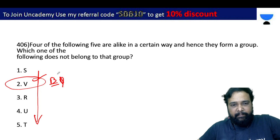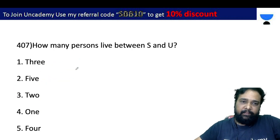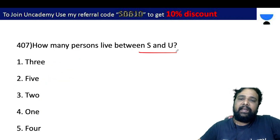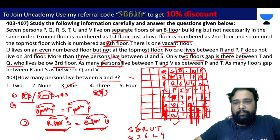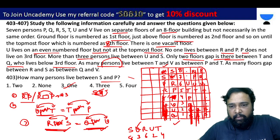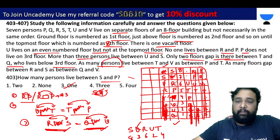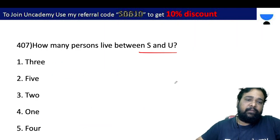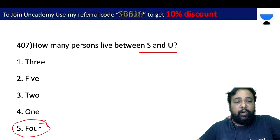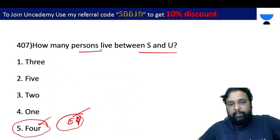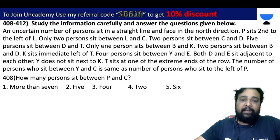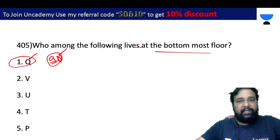So the answer is B for problem number 406. Next, problem 407: How many persons are there between S and U? Between S and U, we have 1, 2, 3, 4 persons. But how many floors? There are 5 floors. However, how many persons — only 4 persons are there. So the answer is E, the fifth option. Only 4 is the right answer.